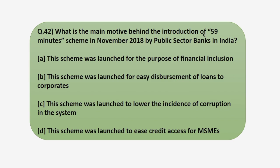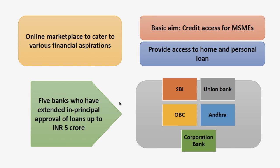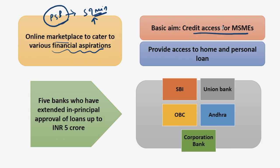What is the main motive behind the introduction of the 59-minute scheme in November 2018 by public sector banks in India? This is an online marketplace to cater to various financial aspirations. Public sector banks made a web portal under the 59-minute scheme where you get a loan approved within 59 minutes — that is, within one hour. Initially the basic aim of this scheme was to improve credit access for MSMEs, up to Rs. 1 crore sanction of loan.